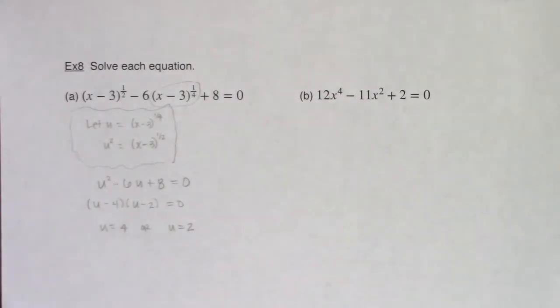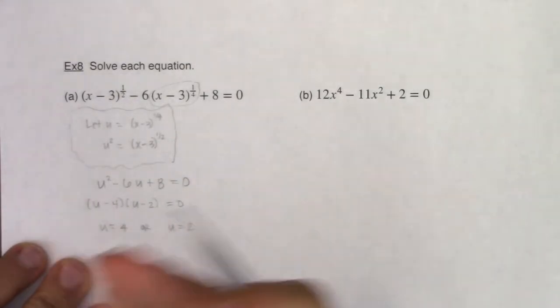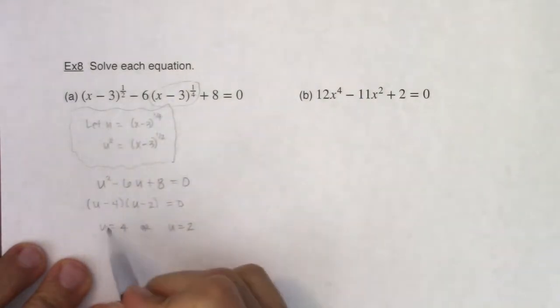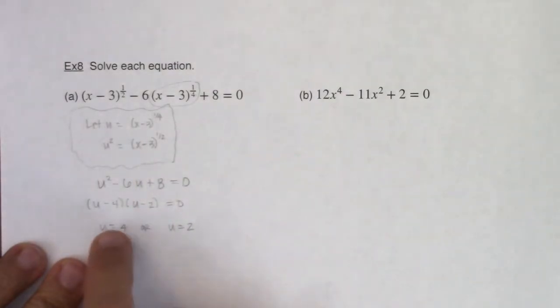And it would be awesome if this was it, just like, oh hey, I'm done. But you started the equation in x's, so you can't end in u's. You have to sub back. You have to end in x's. So we need to figure out, well, if u is equal to 4, what was x equal to? So now we're going to back sub. Instead of writing u, I'm going to write x minus three to the one-fourth. So I'm now going to have x minus three to the one-fourth is equal to 4, or x minus three to the one-fourth is equal to 2.